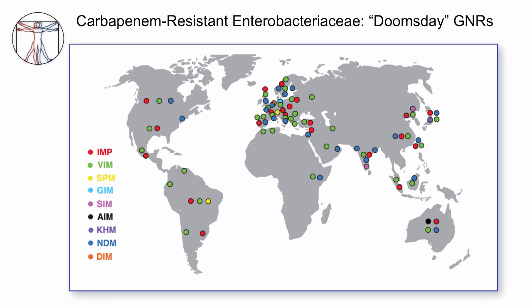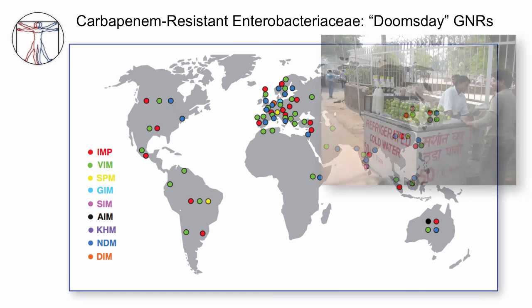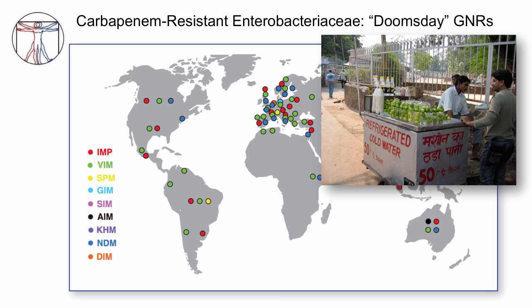Carbapenem-resistant Enterobacteriaceae are sometimes called doomsday gram-negative rods. Enterobacteriaceae like E. coli and Enterobacter should be susceptible to virtually all of our beta-lactam antibiotics — certainly susceptible to the carbapenems, which are the biggest, baddest drugs when it comes to Enterobacteriaceae. Unfortunately, in India, they've consumed so many antibiotics that right now, a great majority of people with asymptomatic colonization of drug-resistant strains live in India. That means that if you acquire these microbes through your diet, you may end up with a bad bug — and if you do get sick, it can be a real catastrophe.